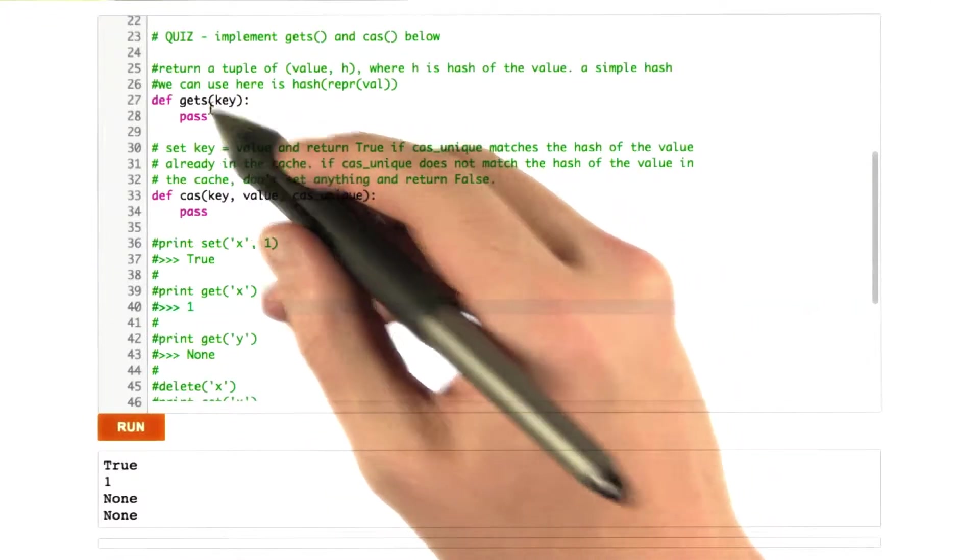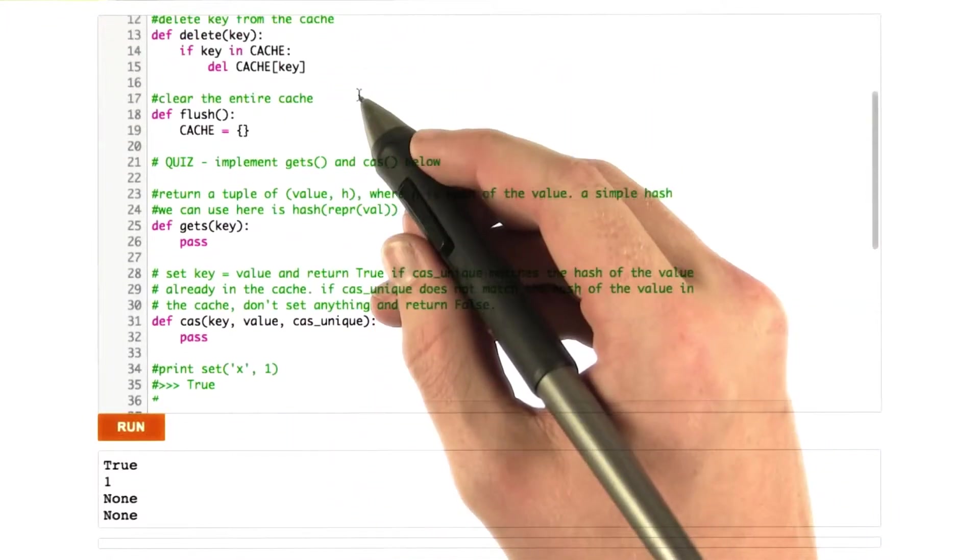Okay, what I'd like you to do is implement the functions gets and cas. I'm in the file with our toy memcache.